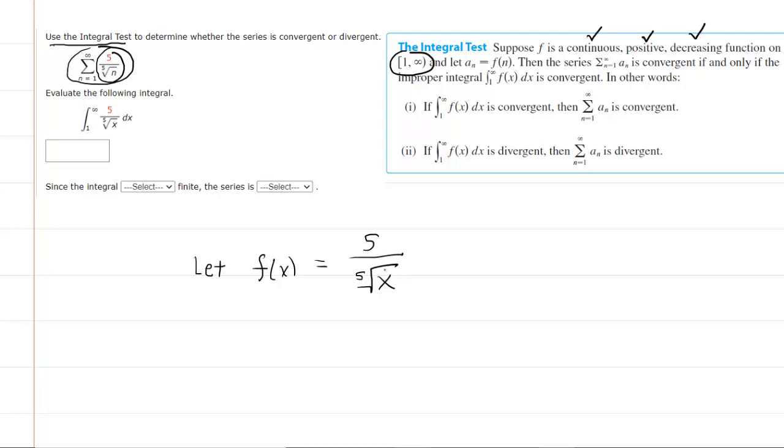It's continuous because the only point of discontinuity would be at x equals 0. We would have 5 divided by 0 in that case, but 0 is not part of the given interval. Furthermore, it's positive because we are plugging in positive values of x from 1 to infinity, and then it certainly is decreasing because as x increases in the denominator, f of x would decrease. So just a couple of quick confirmations of the three conditions, but we can move on to the heart of the matter.